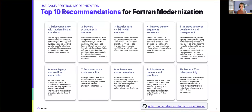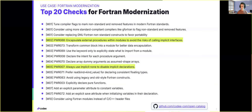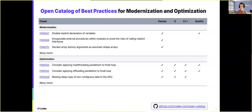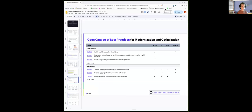In addition to this series of recommendations, the feedback from the community also allowed us to define a series of checks for the modernization of Fortran. The checks provide actual guidance with actionable steps on how to apply the recommendations to modernize the code. For example, specific actions such as encapsulating external procedures within modules, or using the implicit none clause in Fortran to disable implicit declaration of variables. All these checks are being added to the open catalog of best practices for modernization and optimization, a project that we have been working on at CodeE for multiple years.